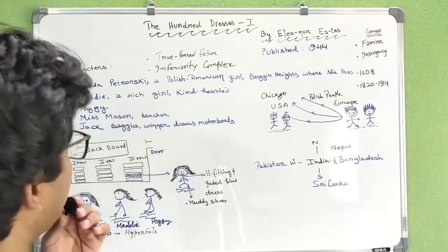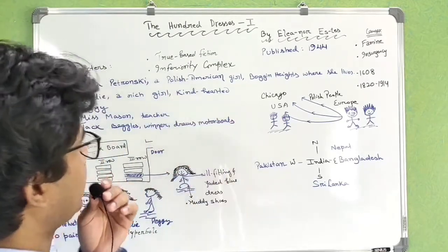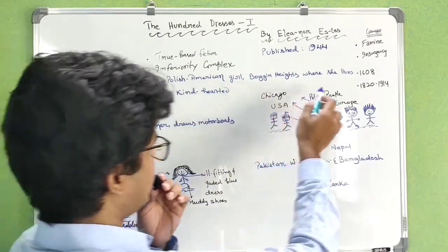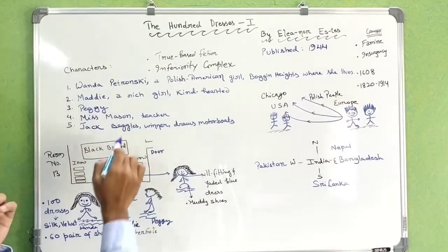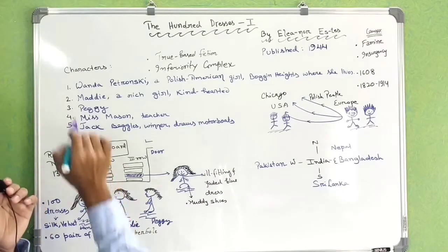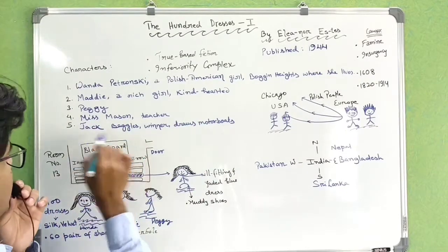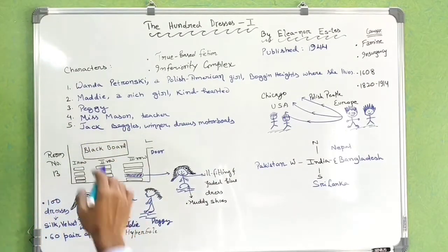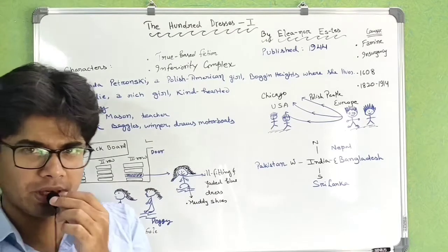Let's take a look at the characters: Wanda Patronsky, who is a Polish-American girl living on Boggin Heights; Maddy, a rich girl who is kind-hearted; Peggy; Miss Mason; and Jack Baggles, who won a drawing competition later in the story.